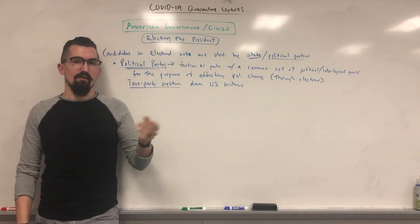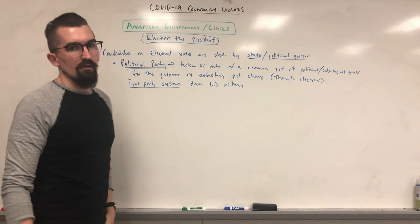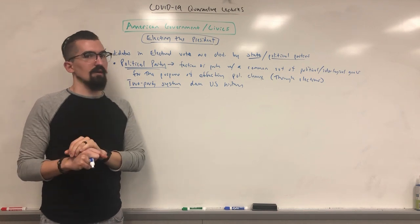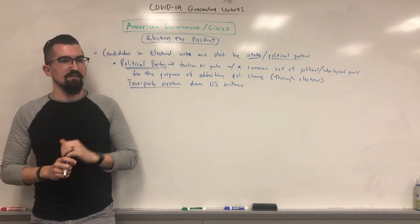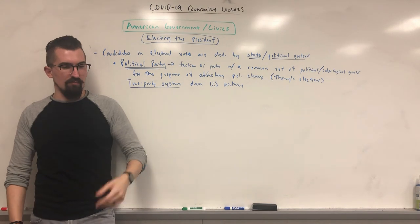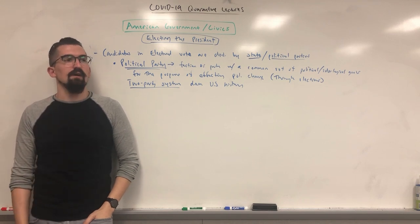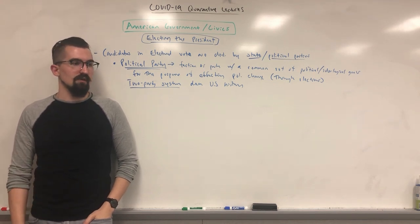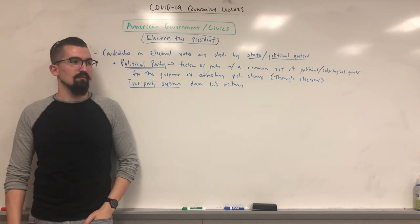Throughout history there have been moments where it wasn't just two parties — parties forming or splitting — but for a very long time it's been the Democratic Party and the Republican Party. However, if you look at them historically, they have flip-flopped on quite a few issues. Right now, Democrats herald themselves as the party of ethnic and racial minorities, but in the 19th century it was very much the opposite — a good chunk of the Republican wing was abolitionist and anti-slavery, while a good chunk of the Democratic wing was pro-slavery in the South.